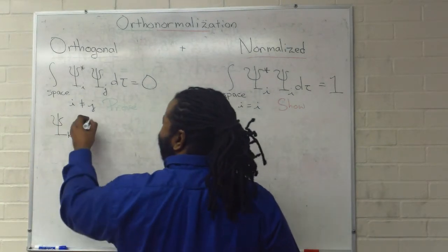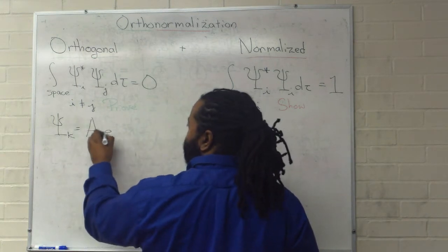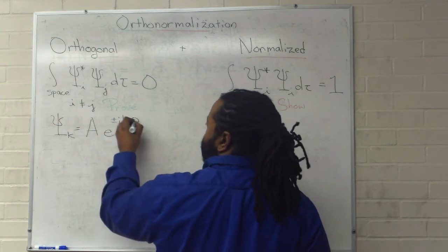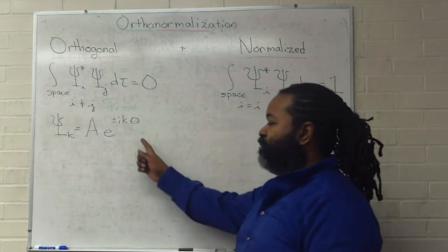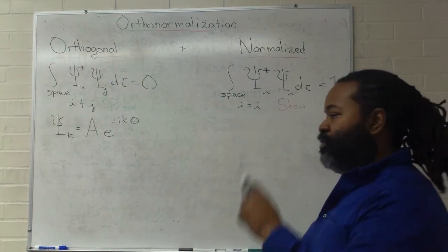A e to the plus or minus i k theta. And because theta is the variable, this gives us polar coordinates.